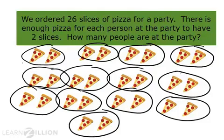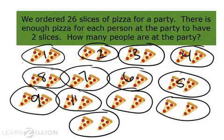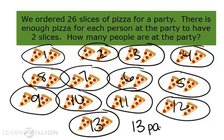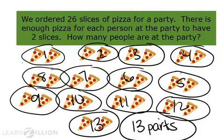So, when I count, I can see that we have one, two, three, four, five, six, seven, eight, nine, ten, eleven, twelve, 13 parts, or 13 groups of two, which will give us our 26 slices of pizza.